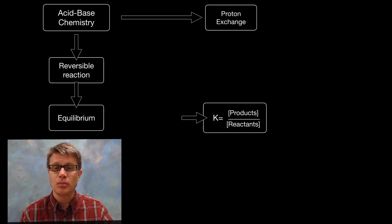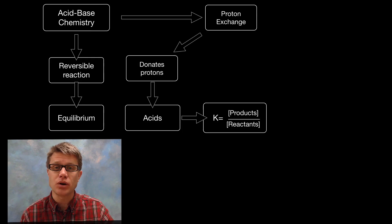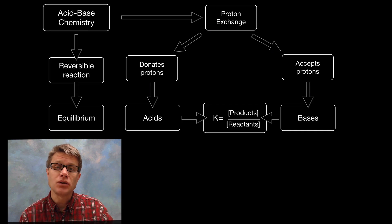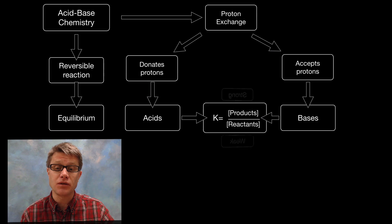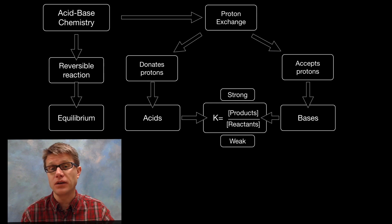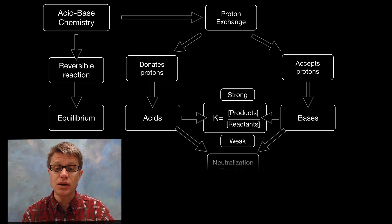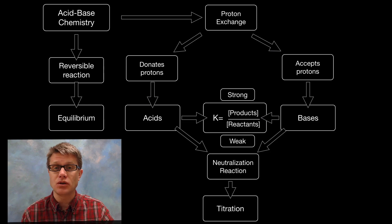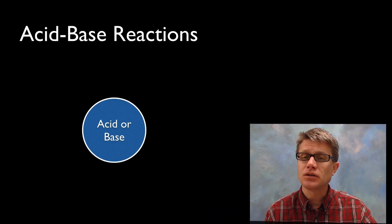What is an acid or a base? It all relates to proton exchange. If you're donating a proton you're going to be an acid, and if you accept a proton you're going to be a base. We can measure the equilibrium constants of acids and bases to determine if they're strong — favoring the products — or weak. We can also combine acids and bases in what's called a neutralization reaction, and we can measure those using titration and titration curves.